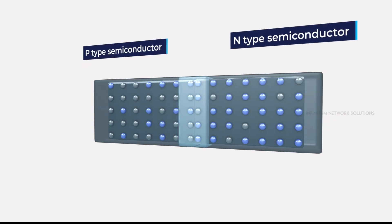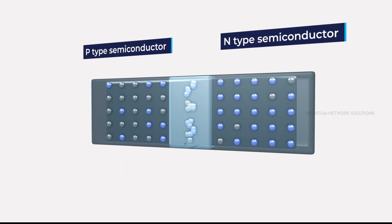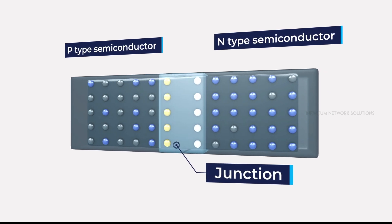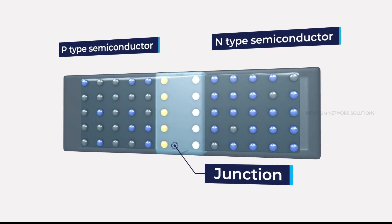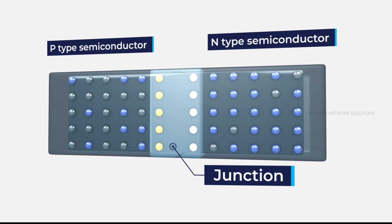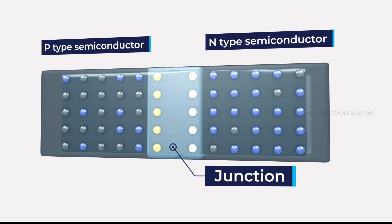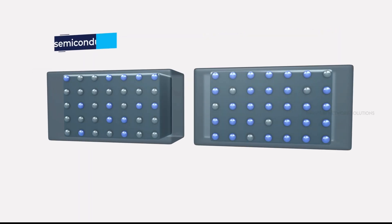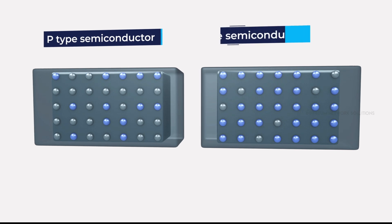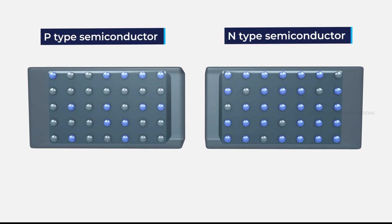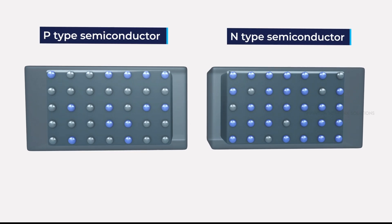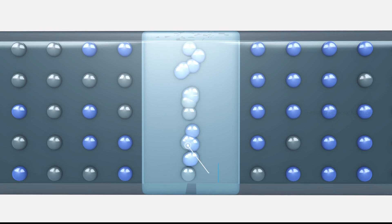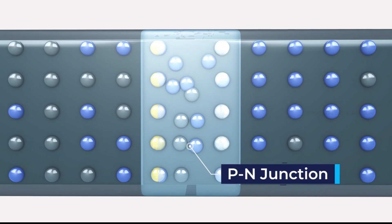The combination of P-type and N-type semiconductors results in a junction. This combination has many applications in electronic devices. When a P-type semiconductor is suitably joined to an N-type semiconductor, a contact is established between them and is called a PN junction.